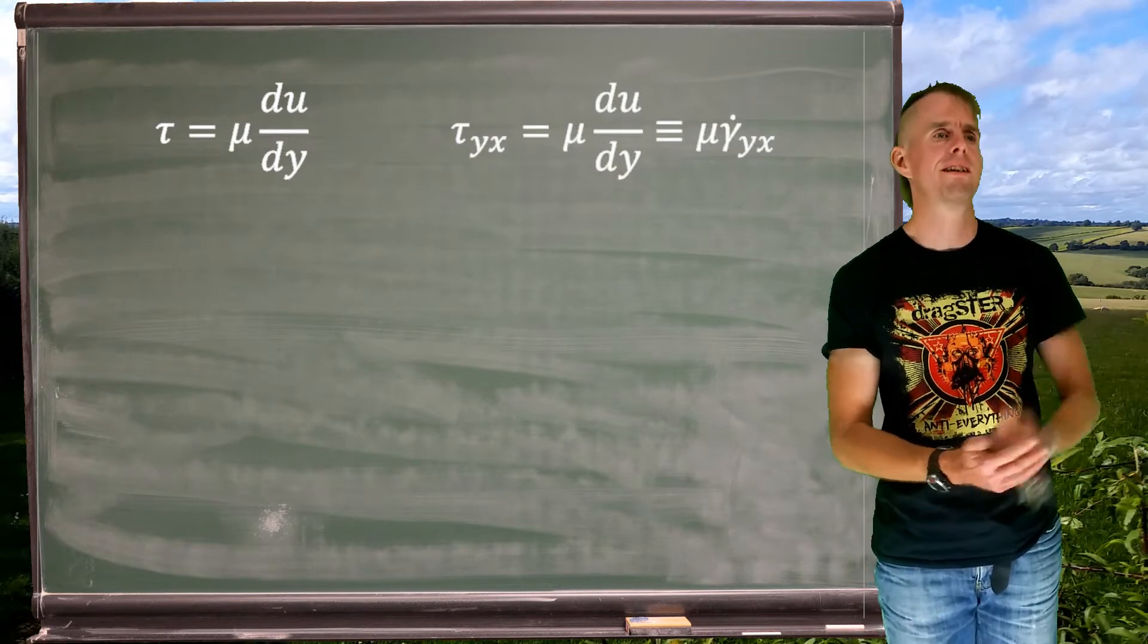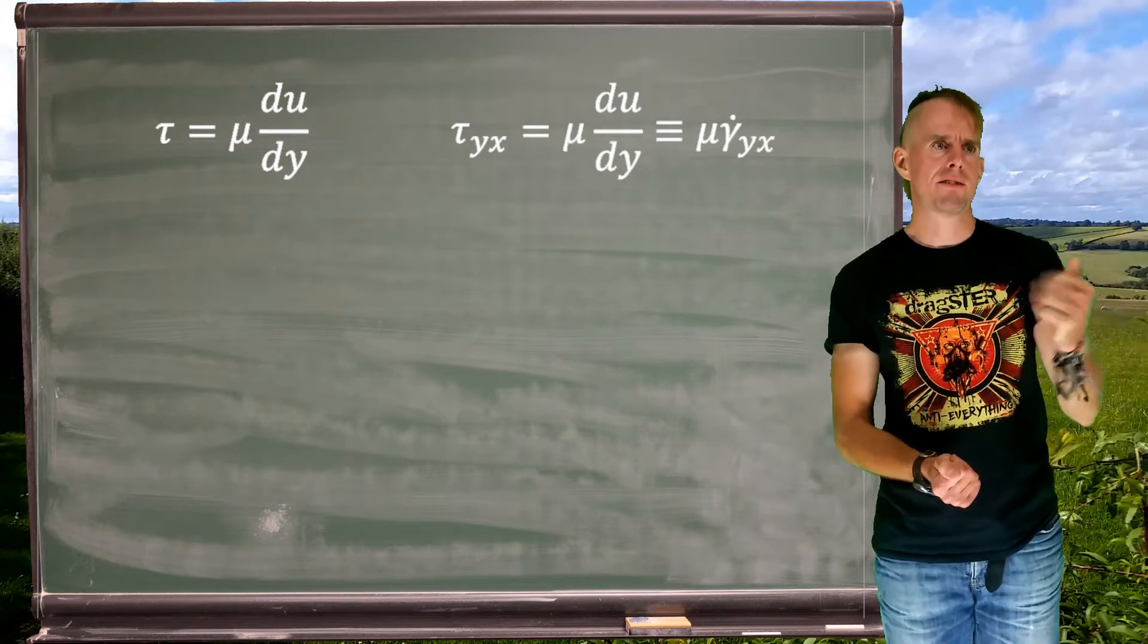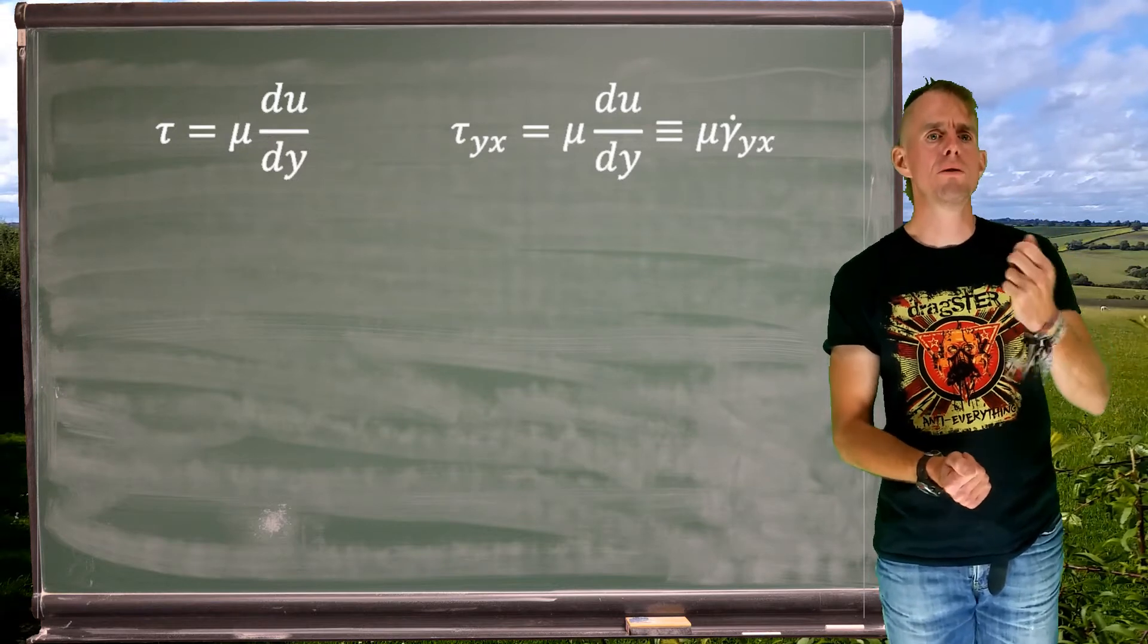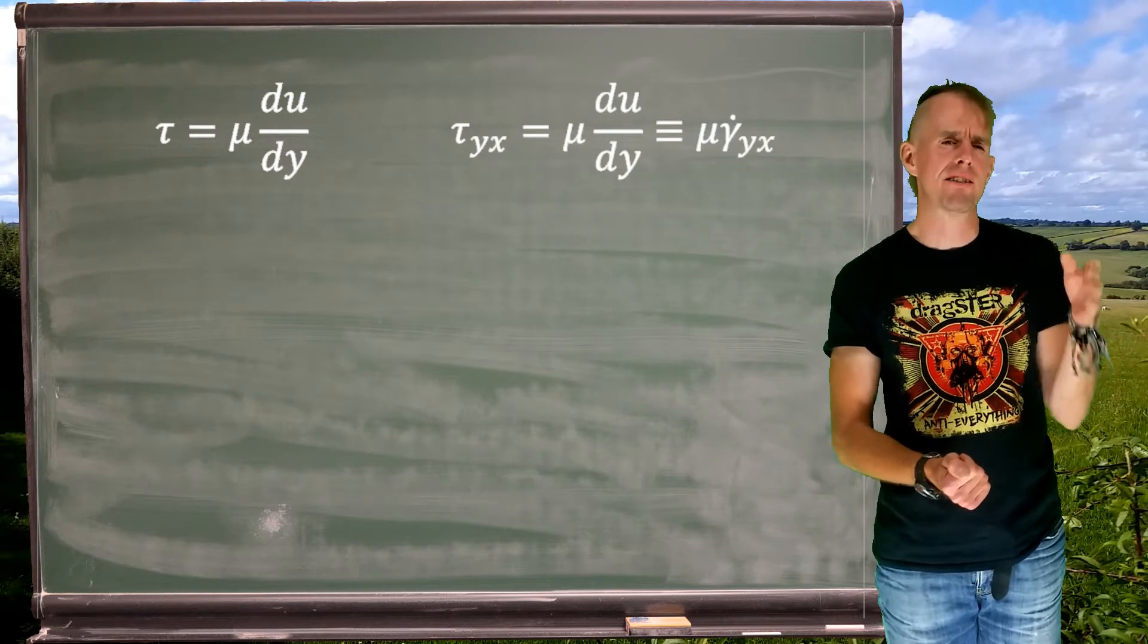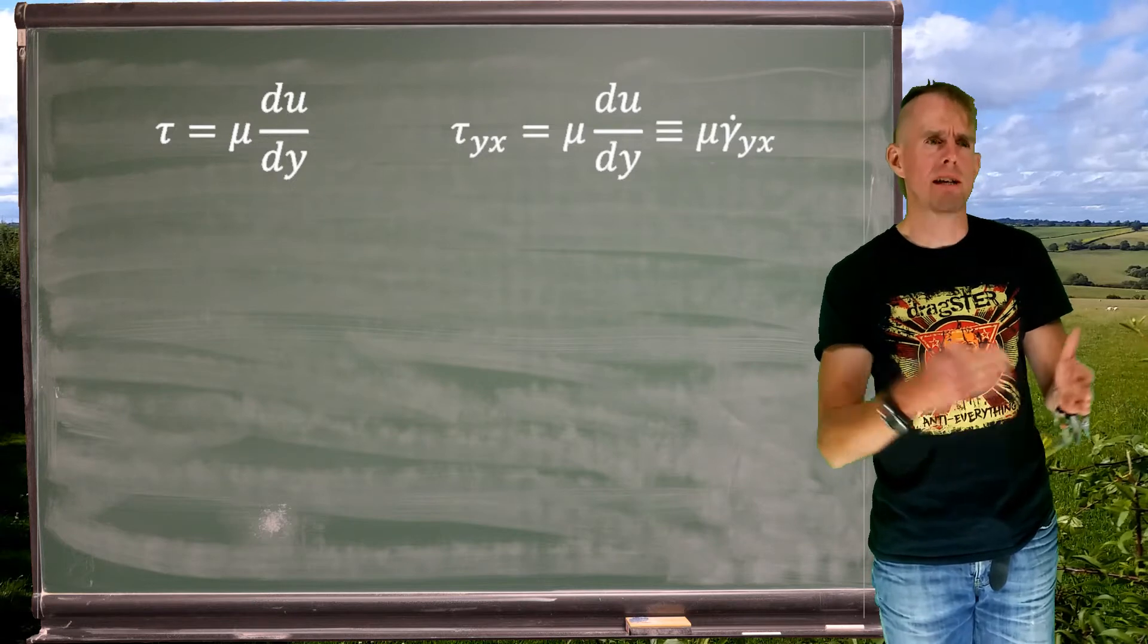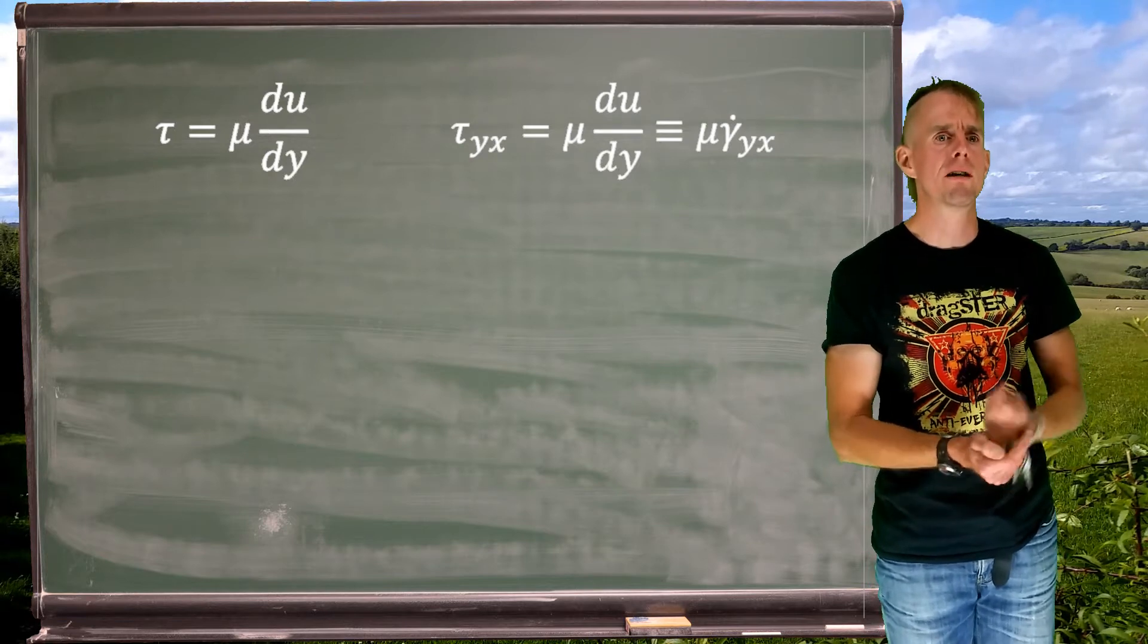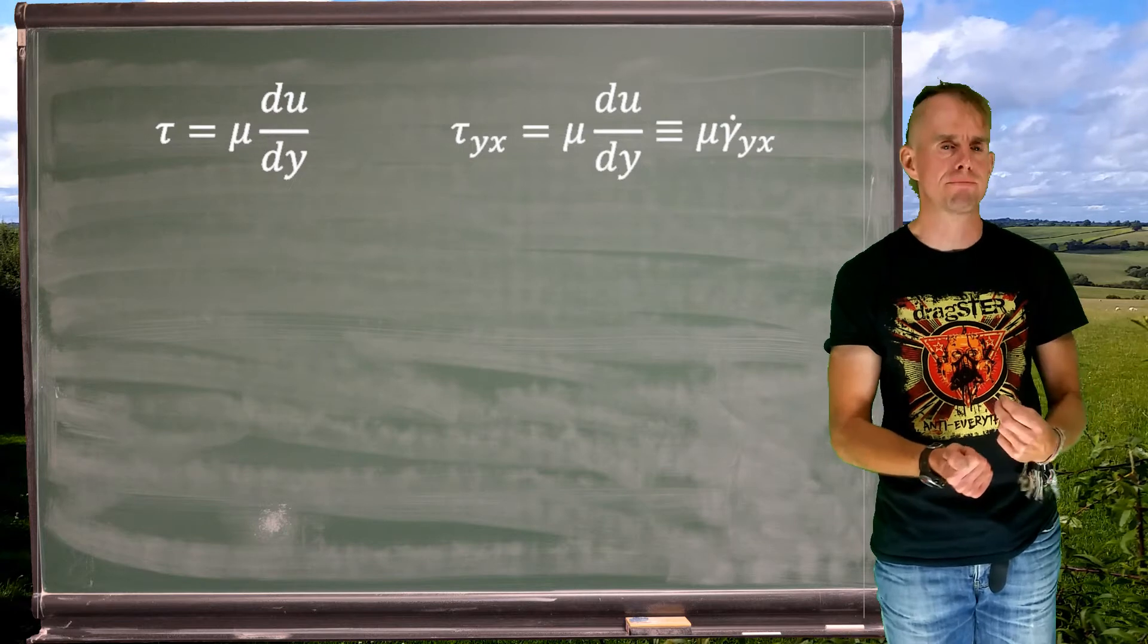What we actually have in this definition is tau yx. So that is equal to mu times du by dy. So tau yx, face first, that's the y face, and the x-direction stress. So the x-direction stress acting on the y face, tau yx, is equal to mu, fluid viscosity, times a change in x-direction velocity, u, in the y direction. Fine.